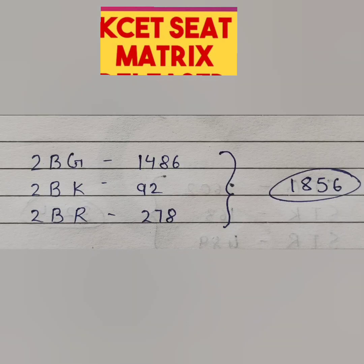The next category is 2B, and again 3 flavors are available: G, K, and R. It has exactly the same 1856 seats as you saw in category 1 — the same combination and same number of seats within each sub-category.